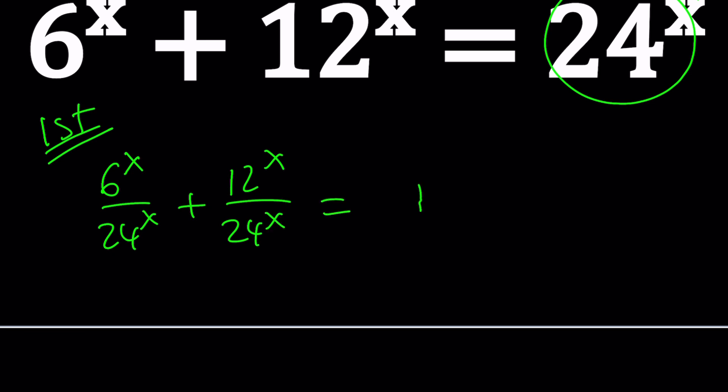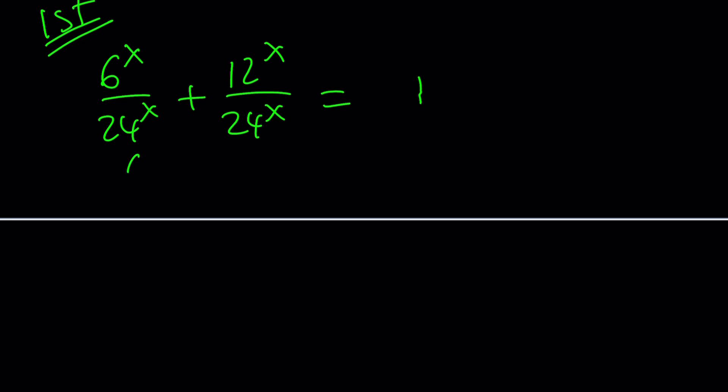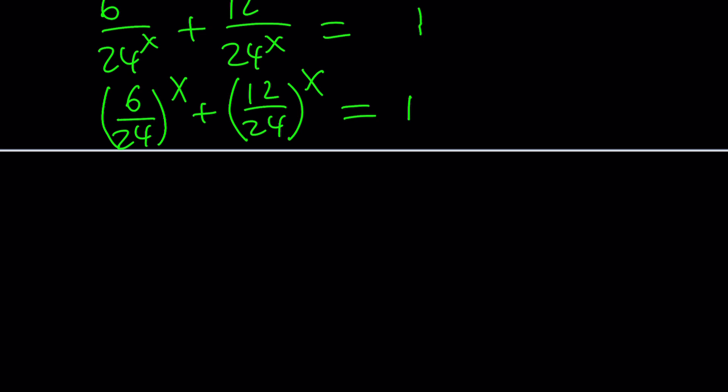This is going to give us 1. And then 6 over 24, that is the base. And here is 12 over 24. They have a common factor, so we're going to simplify. 6 divided by 24 is equivalent to 1/4 to the power x, and this is 1/2 to the power x, and that's equal to 1.